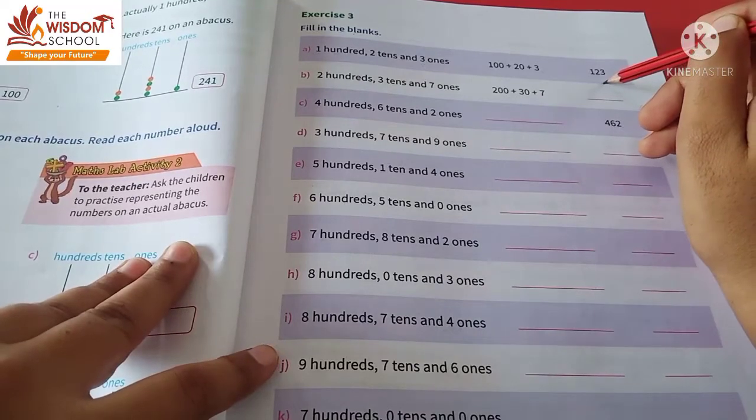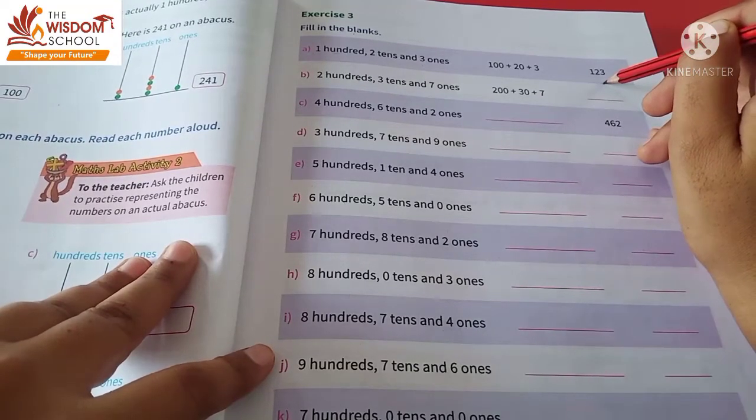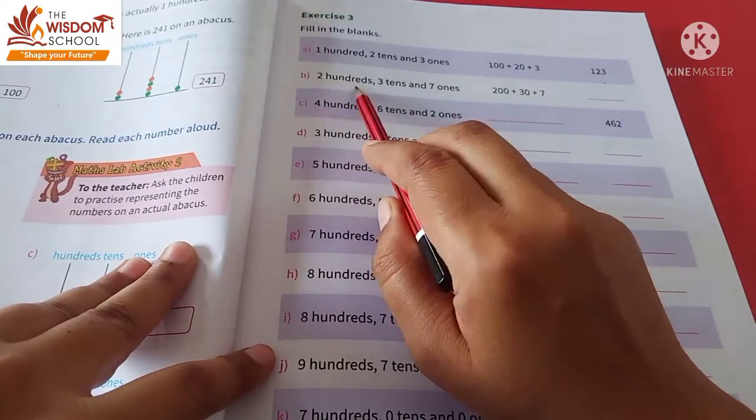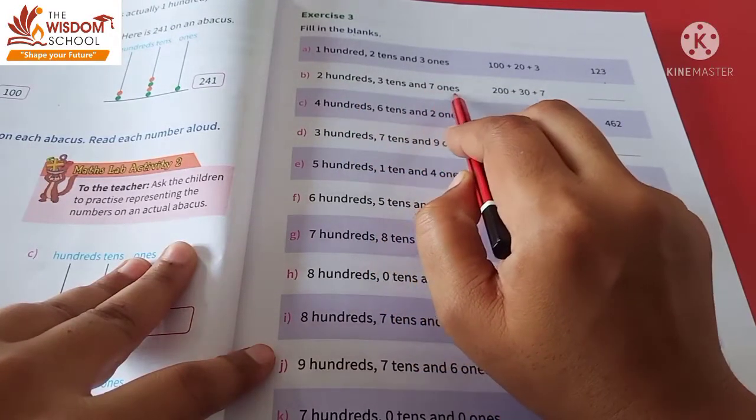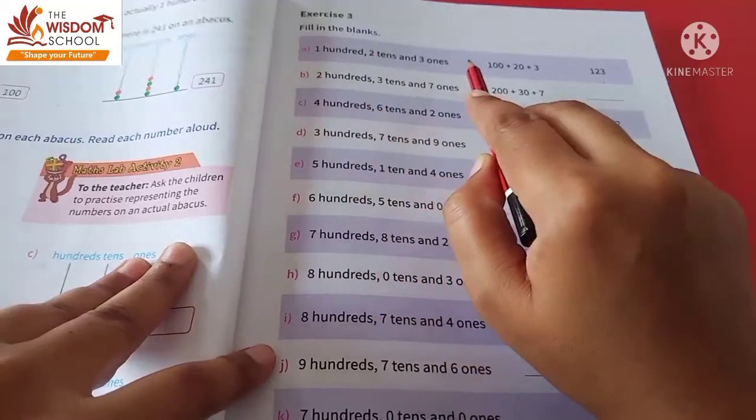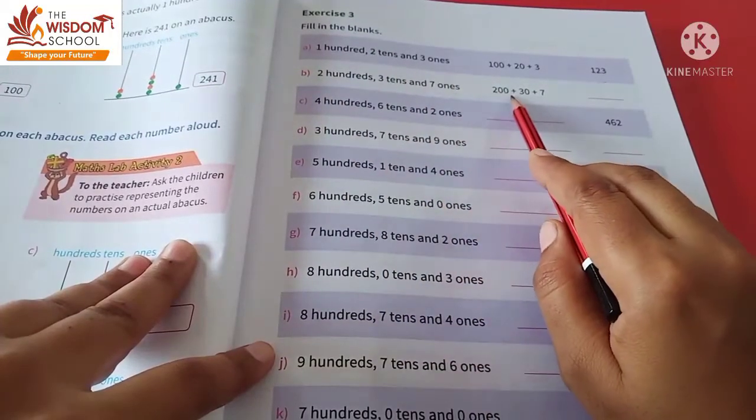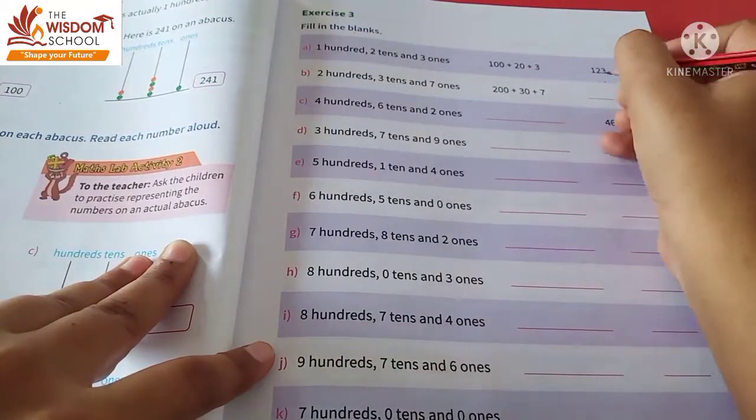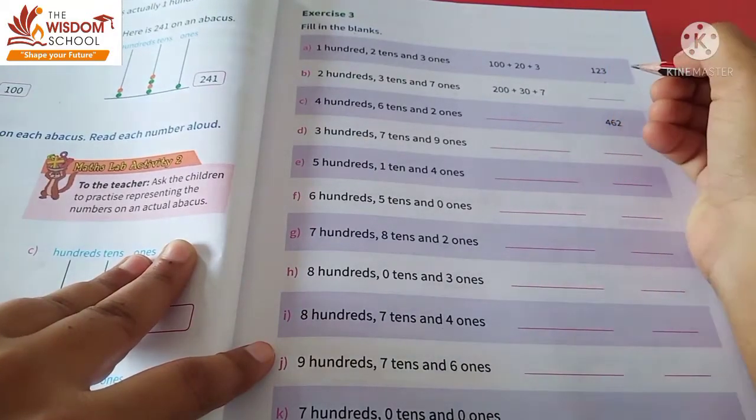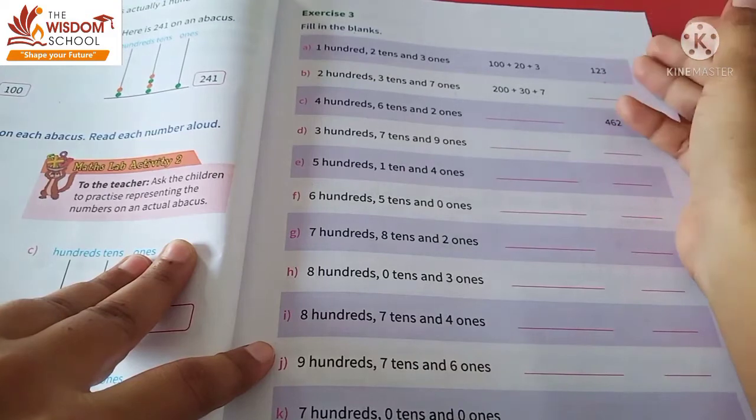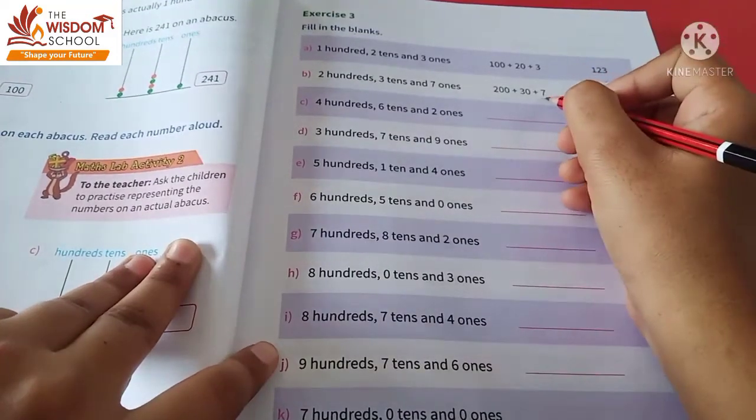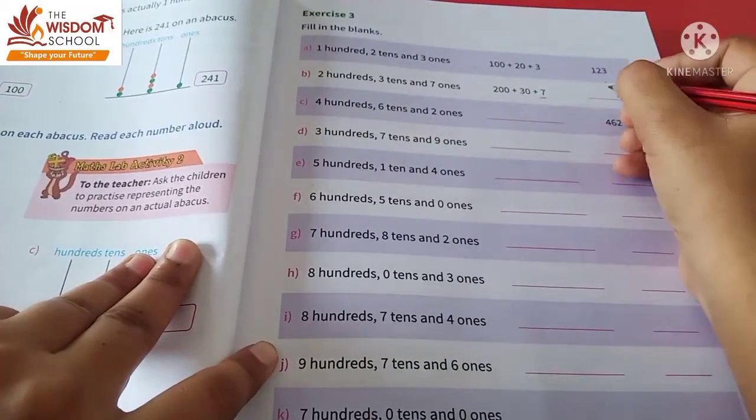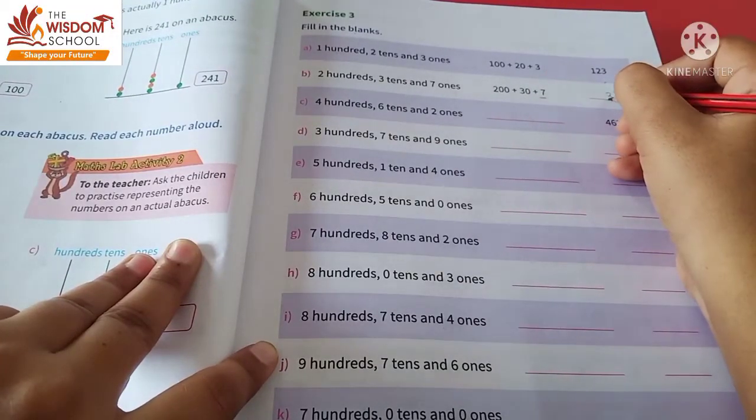Let's look at the second one. It is 200s, 3 tens, and 7 ones. In a similar way, we have written 230 plus 7. You can solve this on your notebook as well. You can write 7 at the ones place, 3 at the tens place, and 2 at the hundreds place.